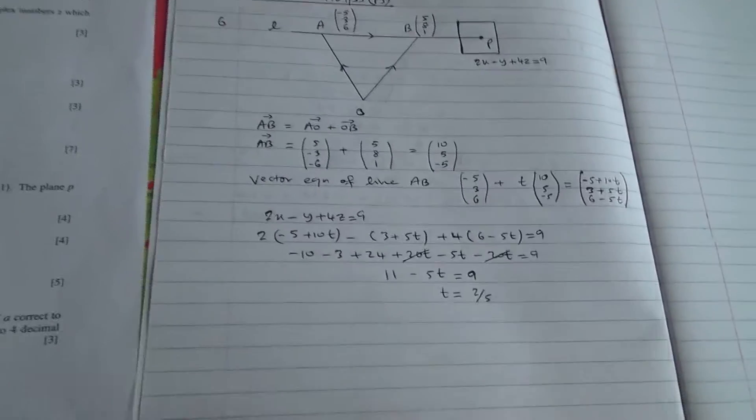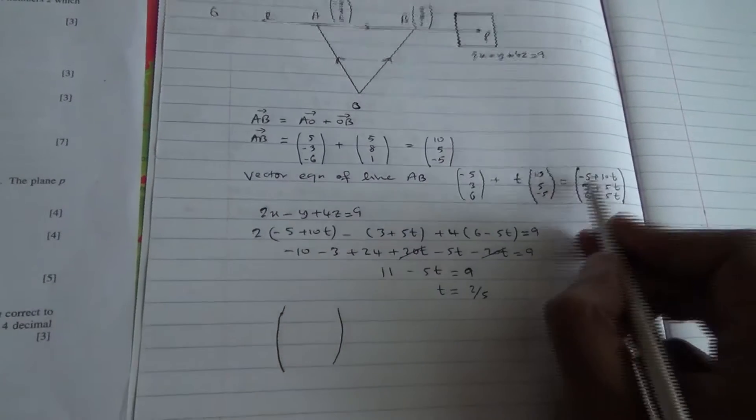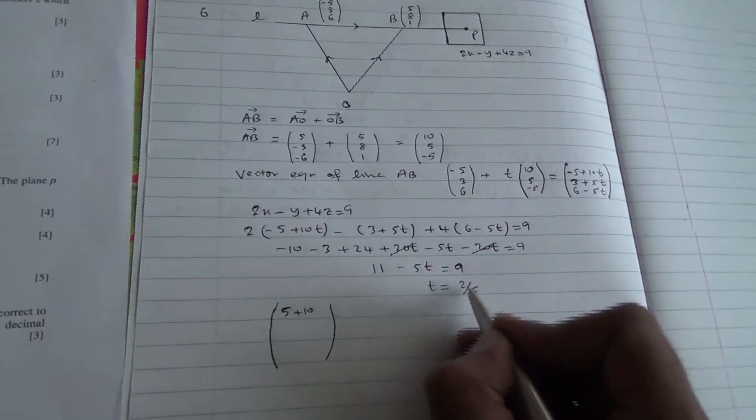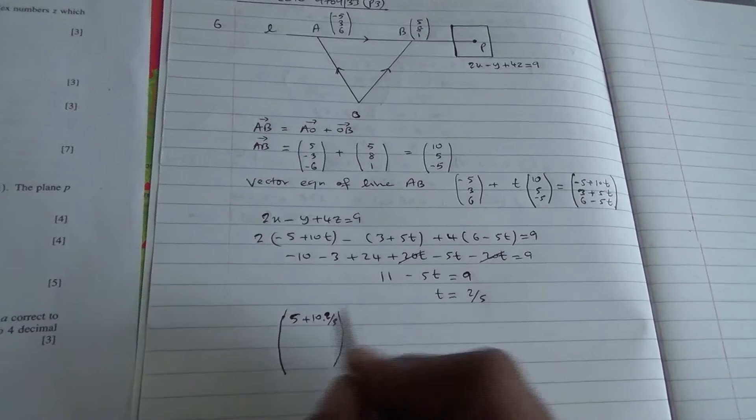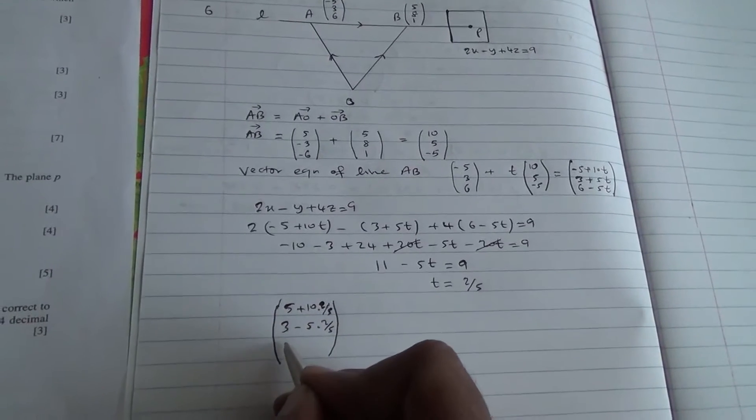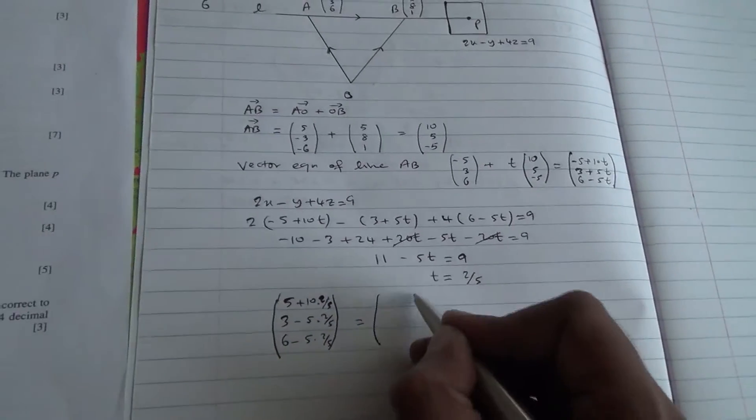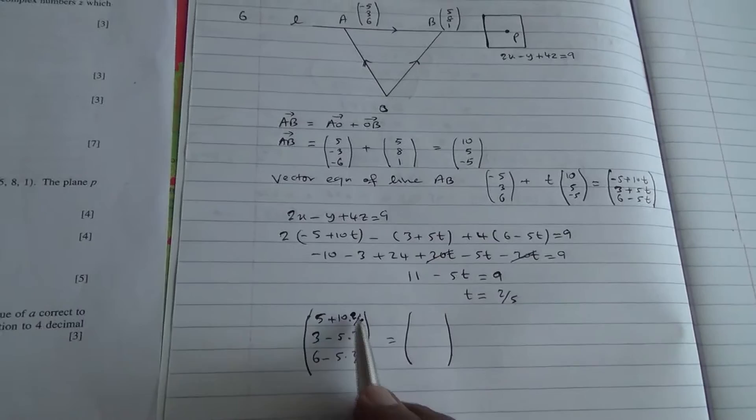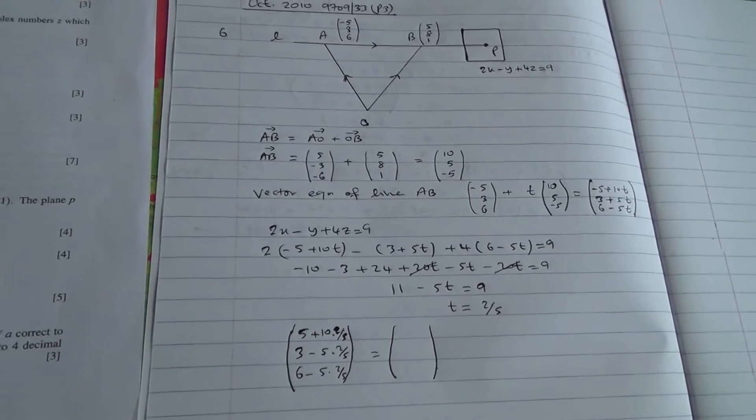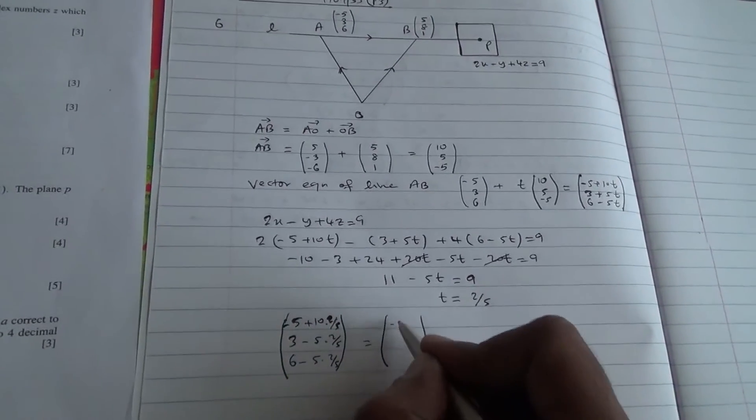Therefore, now we just need to find the point of intersection. We can work that out as follows. Okay, we have -5 + 10 times T, and T is 2/5, 10 times 2/5. And then you've got 3 + 5 times 2/5, and you've got 6 - 5 times 2/5.